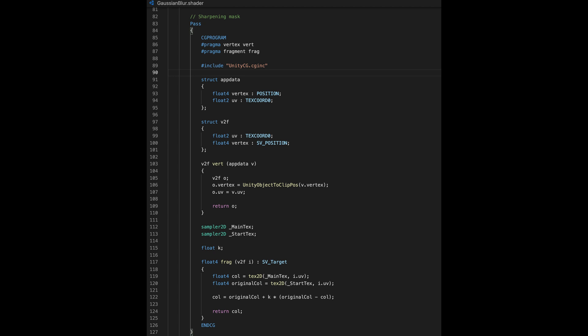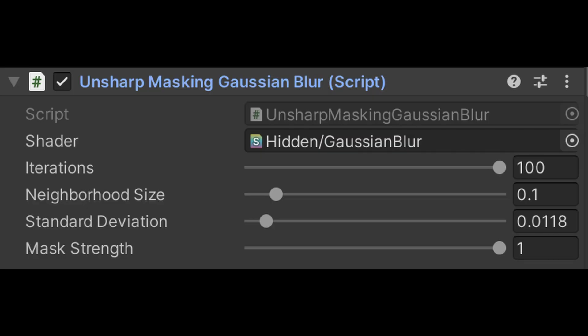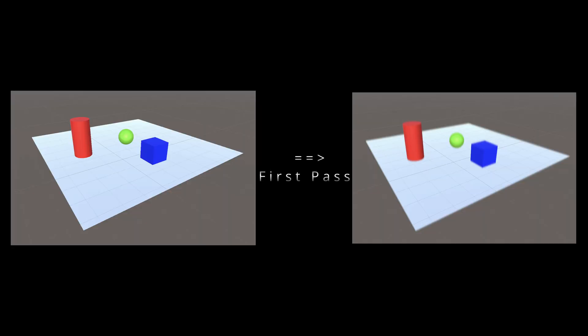The unsharp masking method is simply implemented by generating a blurred mask where the borders are not easily perceived, and then subtracting this mask from the original image. As you may have guessed, we have obtained the opposite of the blur effect.